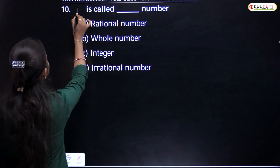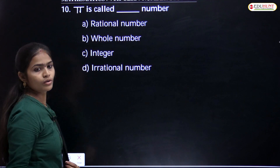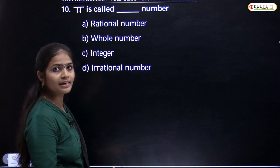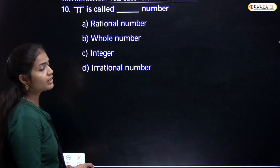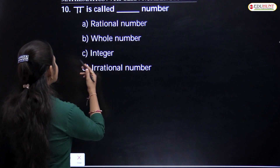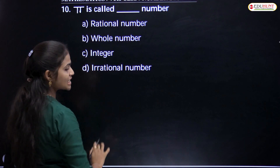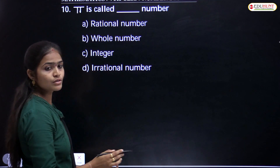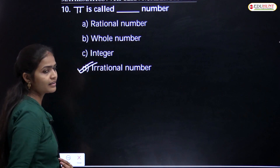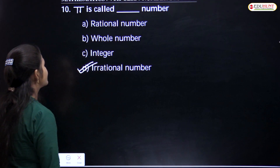The next question: Pi is called what type of number? The options are rational number, whole number, integer, or irrational number. Pi is an irrational number — pi is always an irrational number.